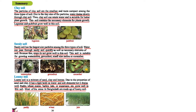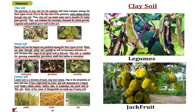The particles of clay soil are the smallest and most compact among the three types of soil. Due to the tiny size of the particles, water drains slowly through clay soil. Thus clay soil can retain water and is suitable for better plant growth. This soil contains the necessary elements for plant growth. Legumes and jackfruit grow well in this soil.